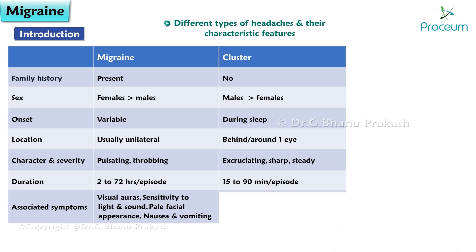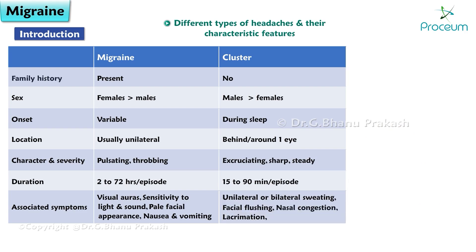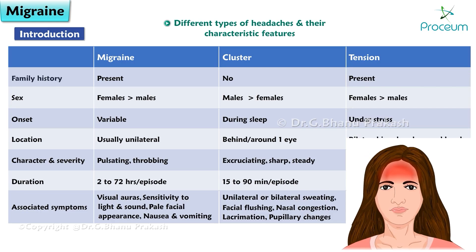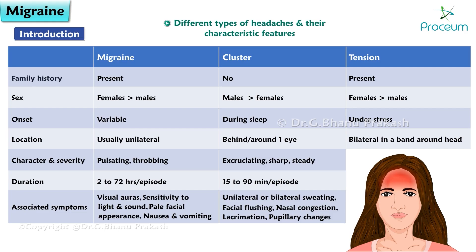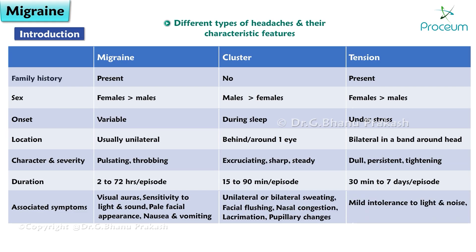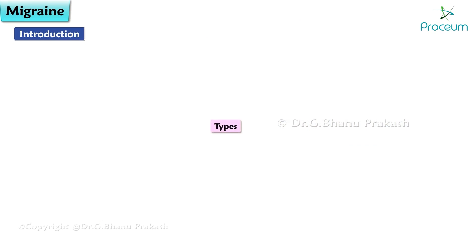Associated symptoms of cluster headache include unilateral or bilateral sweating, facial flushing, nasal congestion, lacrimation, and pupillary changes. In tension-type headache, family history is present, females are more often affected, onset is under stress, location is bilateral — a band around the head — with dull, persistent, tightening pain lasting 30 minutes to 7 days. Associated symptoms include mild intolerance to light and noise, and anorexia.